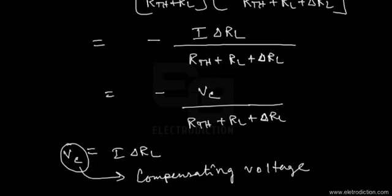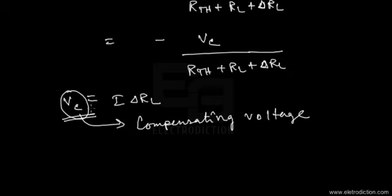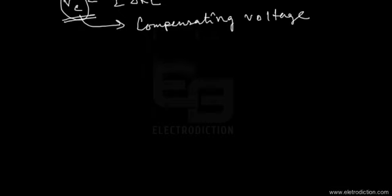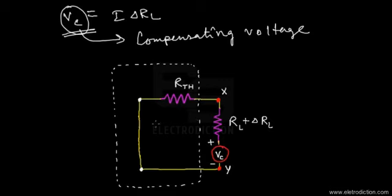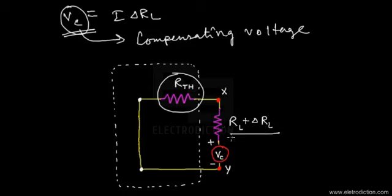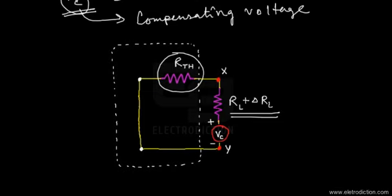According to the theorem, we're supposed to connect this compensating voltage in series with the changed value of the load resistance. In the diagram of the modified — or compensated — circuit, you can see that the voltage sources of the source network have been removed and shorted out, with only their internal resistance obtained from Thevenin's theorem remaining. Along with the changed value of the load resistance RL plus delta RL, we've included the compensating voltage source denoted by VC. This is how we apply the compensation theorem to find the current through a branch due to changes in load resistance.